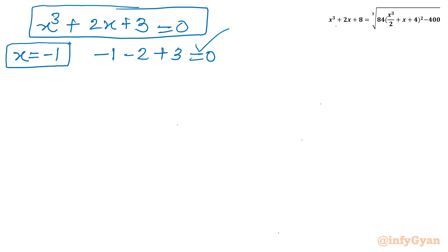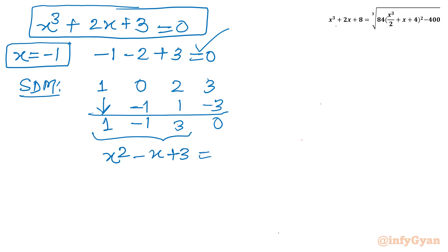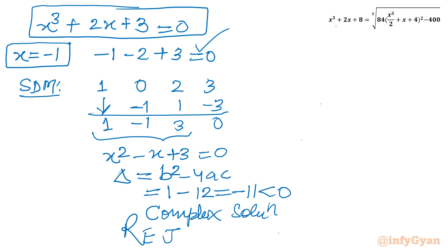To find the remaining factor I use synthetic division. Coefficients are 1, 0, 2, 3 with root −1: leading 1; 1×(−1) = −1; −1×(−1) = 1, so coefficient 1; 1×(−1) = −1; giving 0 remainder. The quadratic factor is x² − x + 3 = 0. Discriminant: b² − 4ac = 1 − 12 = −11, which is negative. So complex solutions — we reject this.